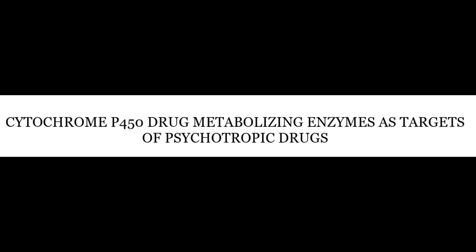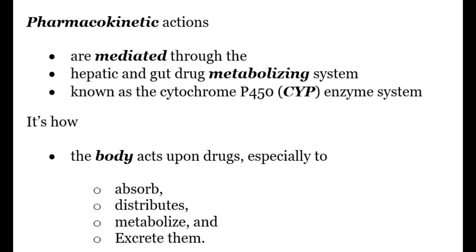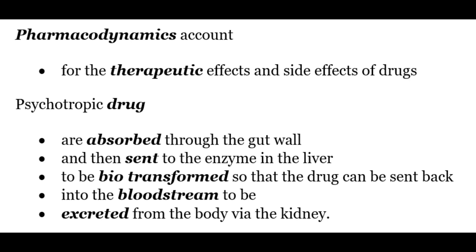Now let's discuss cytochrome P450 drug metabolizing enzymes as targets of psychotropic drugs. To better understand this, we first have to discuss pharmacokinetics and pharmacodynamics. Pharmacokinetics is how the body acts upon the drug — especially to absorb, distribute, metabolize, and excrete it — mediated through hepatic and gut metabolizing systems known as the cytochrome P450 enzyme systems. Pharmacodynamics accounts for the therapeutic effects and side effects of a drug. Psychotropic drugs are absorbed through the gut wall and then sent to the enzymes in the liver to be biotransformed so that the drugs can be excreted from the body via the kidneys.